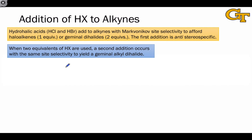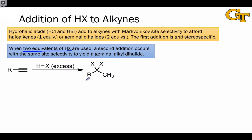If we want a second addition to take place, we can force it using two equivalents or an excess of the hydrohalic acid. Addition of a second equivalent of HX across the alkenyl halide product occurs with the same site selectivity to give a geminal alkyl dihalide, in which two halogen atoms are connected to the more substituted carbon of the terminal alkyne and two hydrogens are connected to the less substituted carbon. This product is a geminal alkyl dihalide since both halogen atoms are connected to a common carbon.